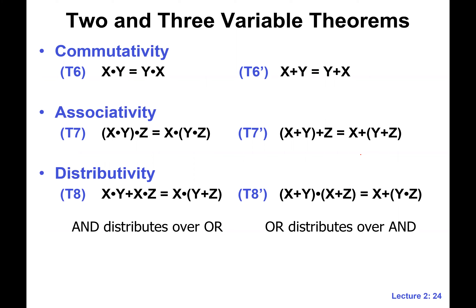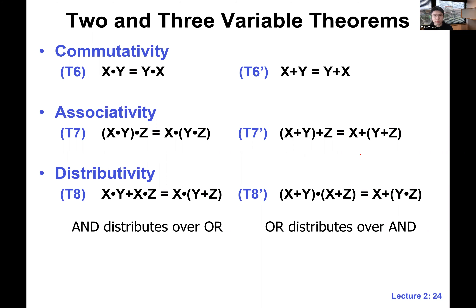Looking at these six theorems, which one looks unfamiliar — which one doesn't work for integers or real values? The other five also work for regular algebra, but notice the nice symmetry in Boolean algebra: even distributivity has a dual form T8-prime. You can verify that T8-prime fails for integers, but for the binary domain it works.